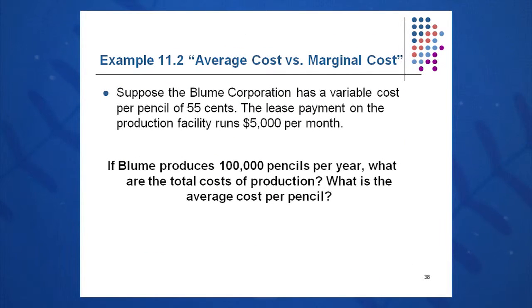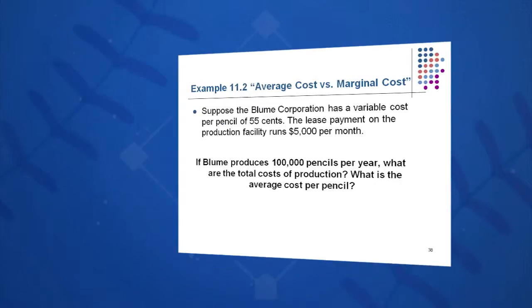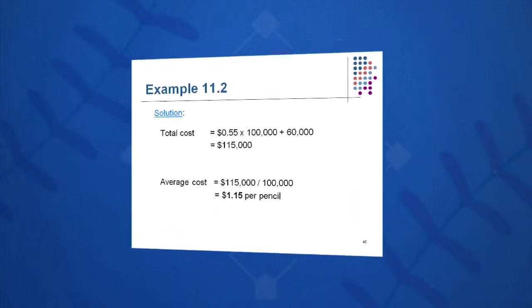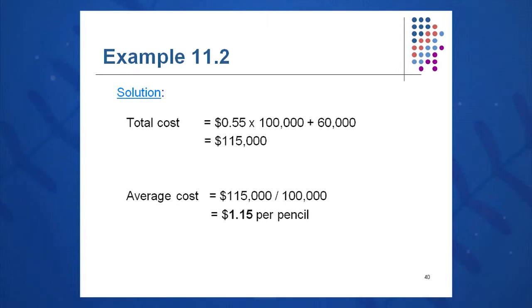Let's look at another example. This company has a variable cost per pencil of $0.55. The rent on the production facility is $5,000 per month, and 100,000 pencils per year are produced. What are the total costs of production and what is the average cost per pencil? Total cost is variable plus fixed — $0.55 times 100,000 pencils plus $60,000 of fixed cost — giving a total cost of $115,000. Average cost is $115,000 divided by 100,000 pencils, or $1.15 per pencil.